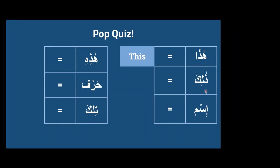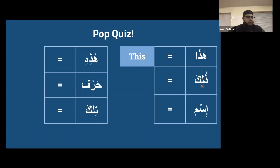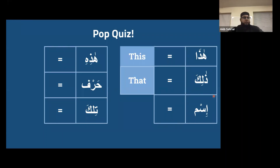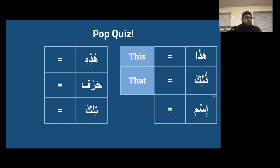'Dhalika' means 'that,' also used for the masculine gender. 'Hadha' is used for something close by, something near. 'Dhalika' is used for something a bit further away - just like in English when we say 'that over there,' referring to something distanced from yourself. We also went over last week the types of words and vocabulary used throughout the Quran and in the Arabic language.